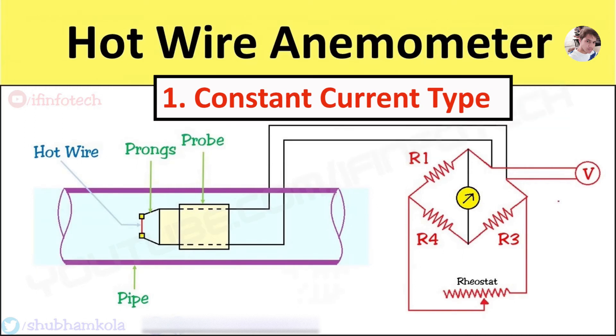First is constant current type. In this type, variation of flow results in change to wire temperature. Resistance of wire also changes. This change in resistance then becomes a measure of flow.